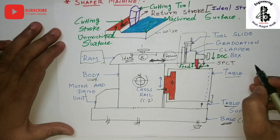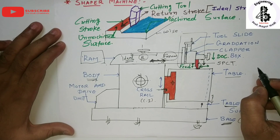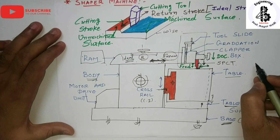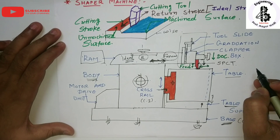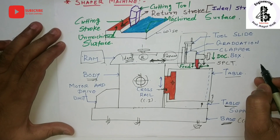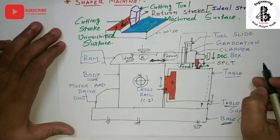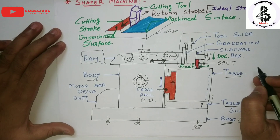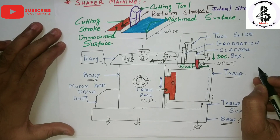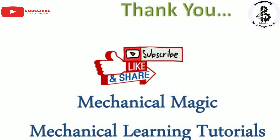The basic applications of the shaper machine include making slots or flat surfaces on the workpiece material at any angle, or at right angles. That covers the construction and working principle of the shaper machine. If you liked this, please subscribe and share Mechanical Magic Mechanical Learning Tutorials. Thank you very much.